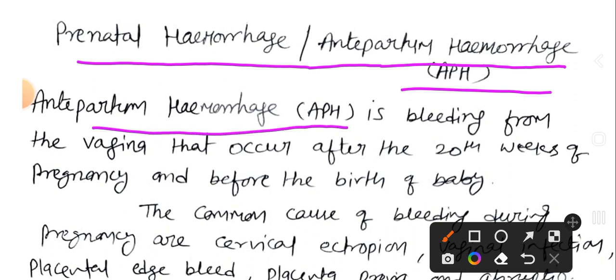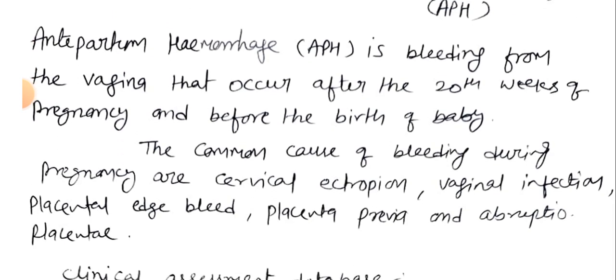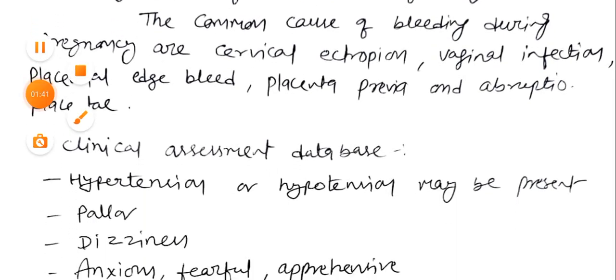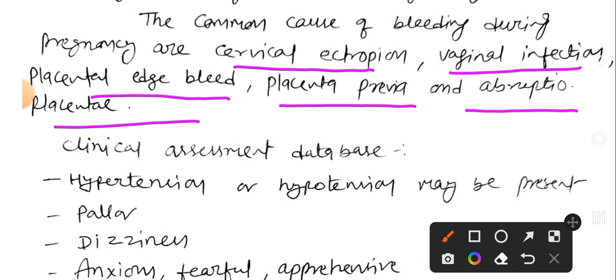Antepartum hemorrhage is bleeding from the vagina that occurs after the 20th week of pregnancy and before the birth of the baby. The common causes of bleeding during pregnancy are cervical ectropion, vaginal infection, placental abruption, placenta previa, and abruptio placentae.